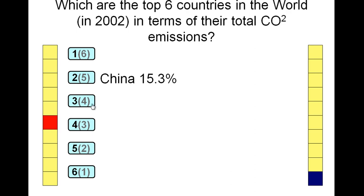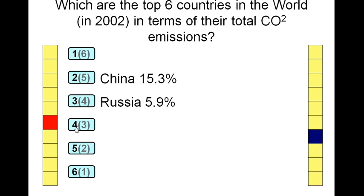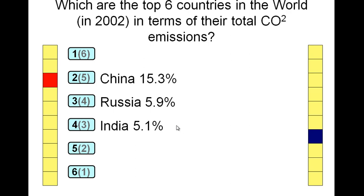Then it'd be the blue team's turn. Let's say they called out Russia — that's third place — they get four points and move up to four. If the next team called out India, then they get three points and move up accordingly.